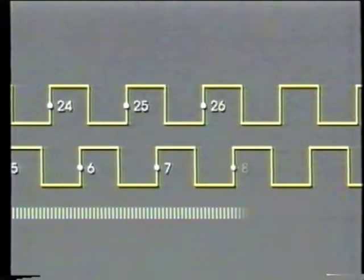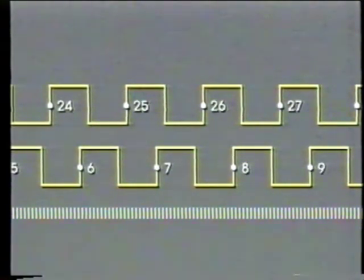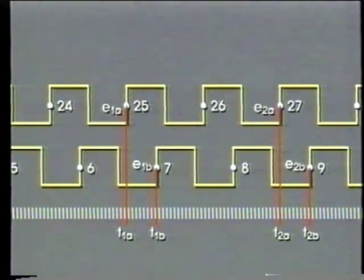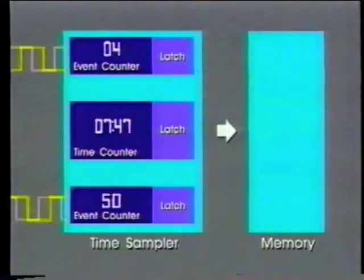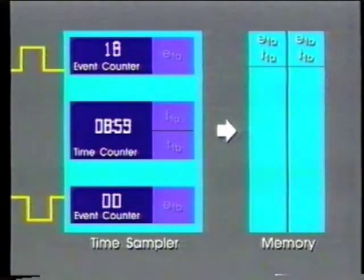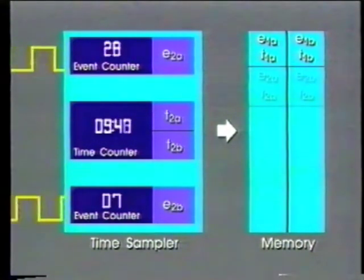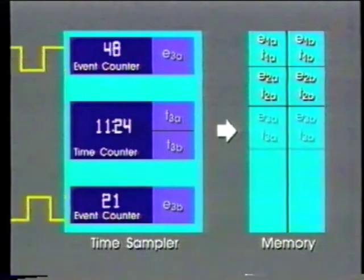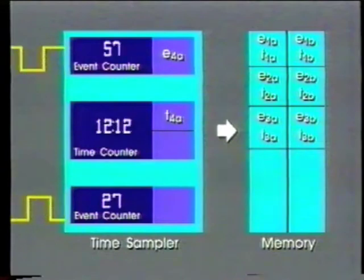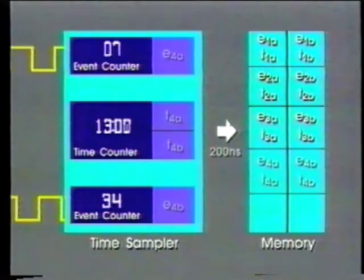Let's make a time interval measurement on two separate signals. We are keeping track of events and time, but this time we are time-tagging two events rather than one. Using both event counters, each pair of start and stop triggers is latched simultaneously with a time count. Since it takes 100 nanoseconds to store the contents of each latch, start-stop pairs can be recorded every 200 nanoseconds.